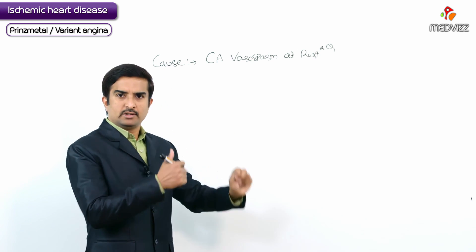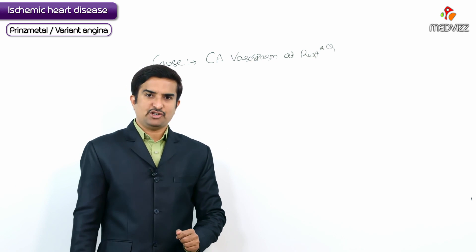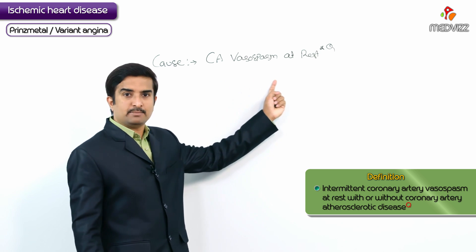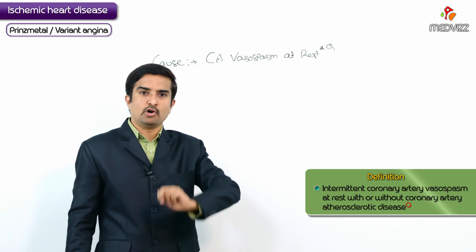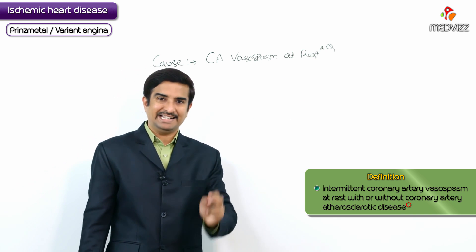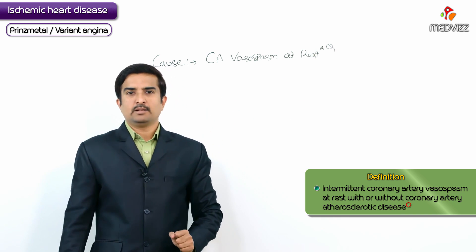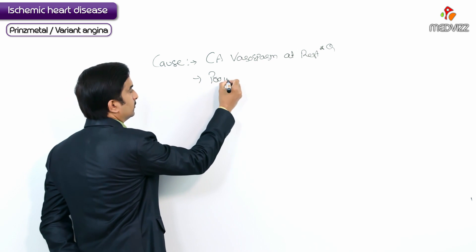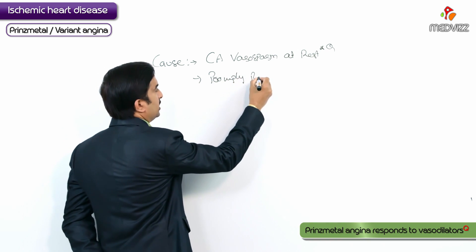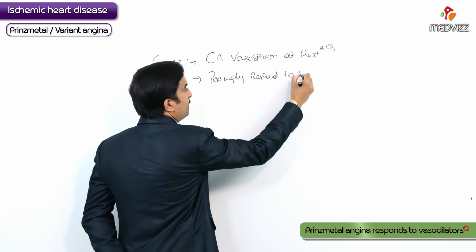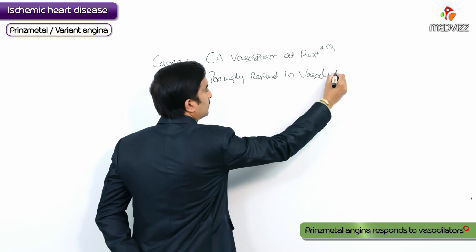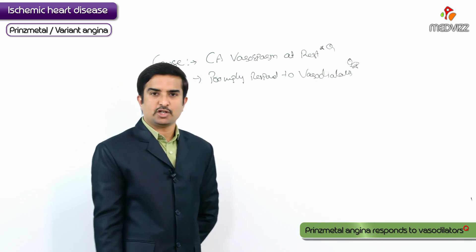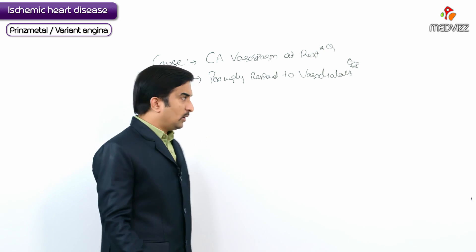It is an intermittent coronary artery vasospasm at rest, with or without superimposed coronary artery atherosclerotic disease, that is called Prinzmetal variant angina. Remember that this condition promptly responds to vasodilators — another important MCQ point for the exam.